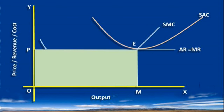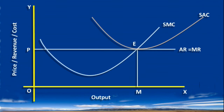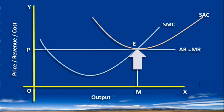When you draw the graph, you have to slightly alter the position of the SAC curve. The minimum point of the SAC curve must coincide with the AR curve at point E.